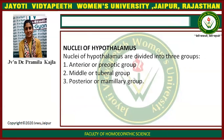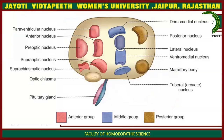The nuclei of the hypothalamus are divided into three groups: the anterior or pre-optic group, the middle or tubular group, and the posterior or mammillary group.